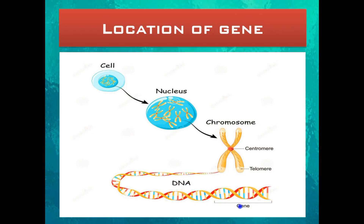The DNA is made up of segments called genes. Genes are a set of instructions that determine what the organism is like — its appearance, how it survives, and how it behaves in its environment. They determine both the external and internal features of an organism.